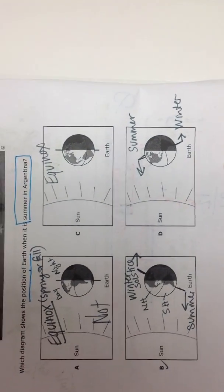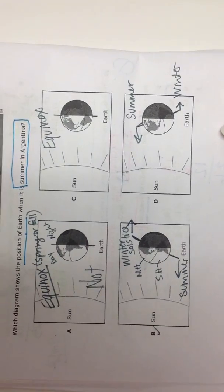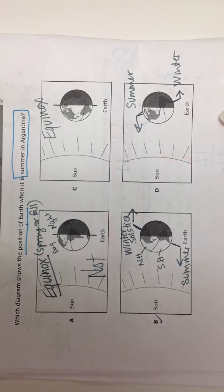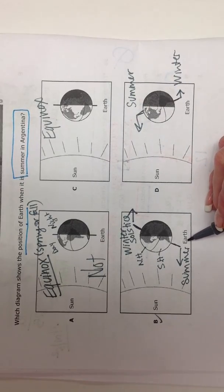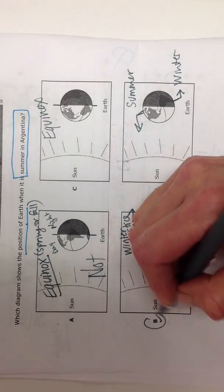We are definitely looking for the diagram that shows summer in Argentina, meaning winter in the northern hemisphere. B would be our answer choice.